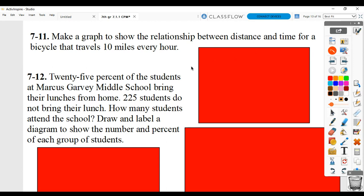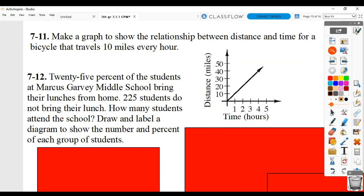For 7.11, you have to make a graph to show the relationship between distance and time for a bicycle that travels 10 miles every hour. You should either put this on graph paper and insert it into your homework doc or use Google to insert a graph into your homework doc and then use the drawing tool.